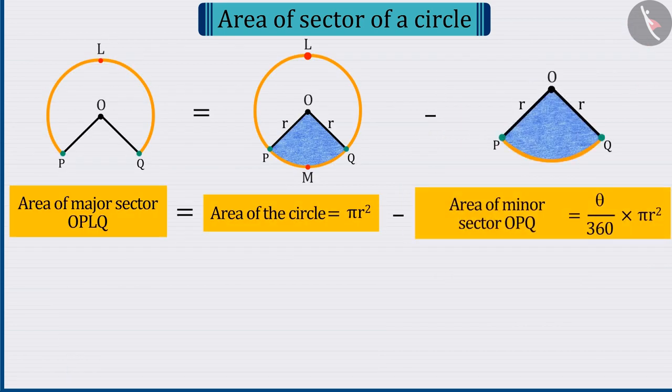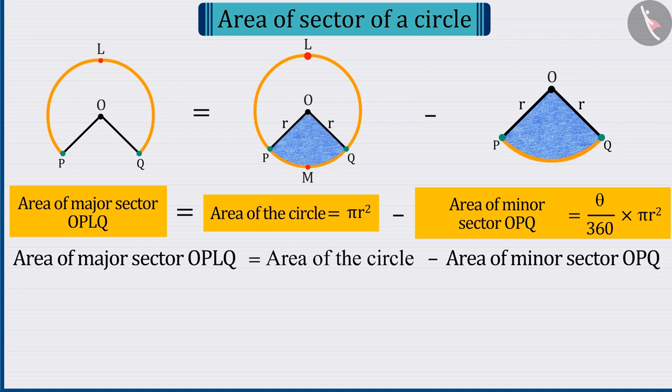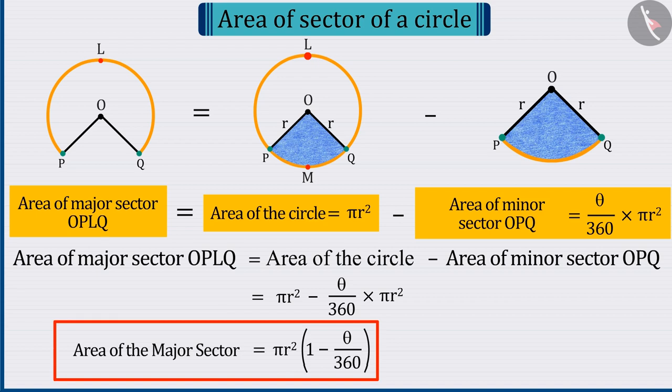Observing the figure carefully, we can tell that from the area of the circle pi r square, subtract the area of the minor sector. Then, what we get is the area of major sector OPLQ.